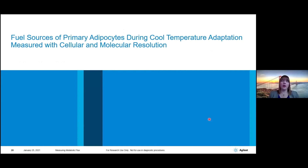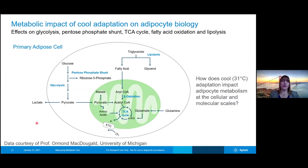In the second example, I'll be covering the fuel sources for primary adipocytes and what happens to metabolic rates during cool temperature adaptation. This work and data was provided by Professor Orman McDougald at the University of Michigan. In this case, we have adipocyte or fat cells, so we have some additional components. We'll look at glycolysis and the TCA cycle, but we'll also take a look at the pentose phosphate shunt, as well as lipolysis and beta oxidation, since these are fat cells.